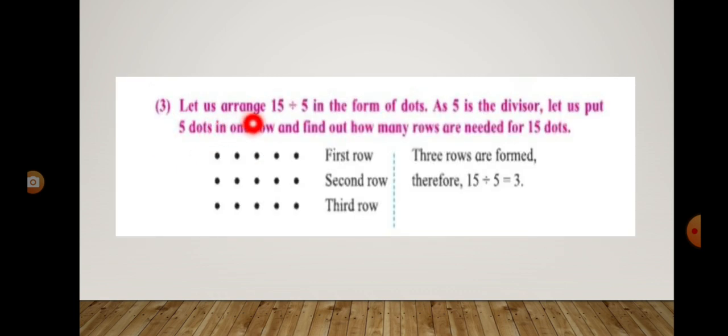Now let us arrange 15 divided by 5 in the form of dots. As 5 is the divisor, let us put 5 dots in one row and find out how many rows are needed for 15 dots. You have 5, 5, and 5. So 3 rows are formed. Therefore 15 divided by 5 equals 3.